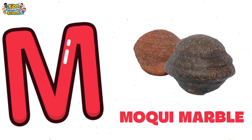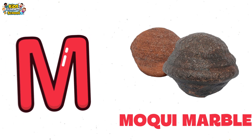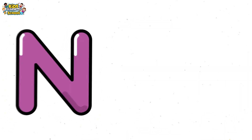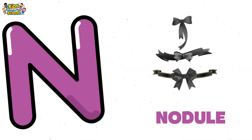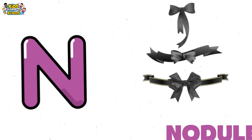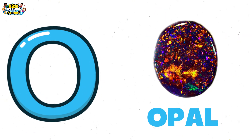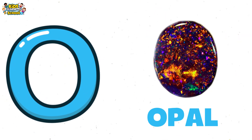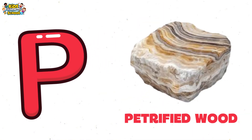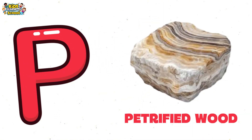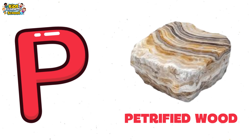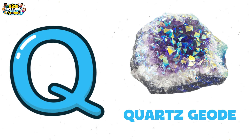M is for mochi marble, desert spheres. N is for nodule, formed over years. O is for opal, fire trapped in stone. P is for petrified wood, fossil grown. Q is for quartz, with crystals inside.